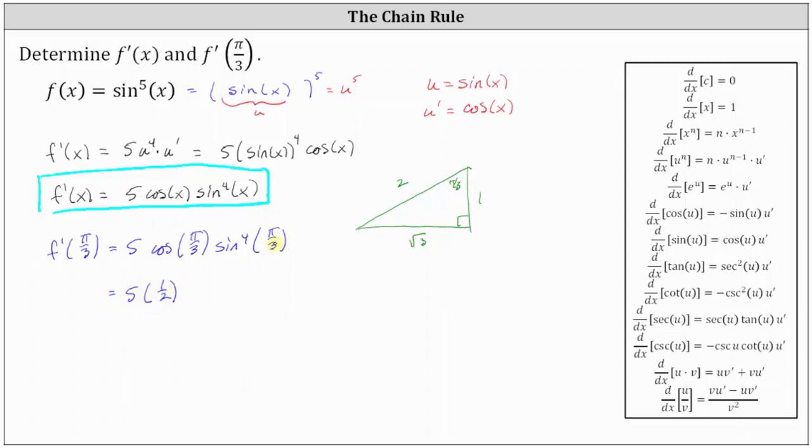and now we need to find the sine of pi divided by three, which is equal to the ratio of the opposite side to the hypotenuse, which is square root of three divided by two. But because we have sine to the fourth pi divided by three, we have the fourth power of square root of three divided by two.